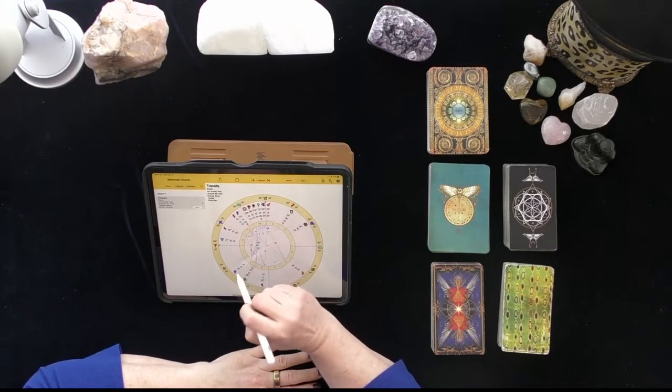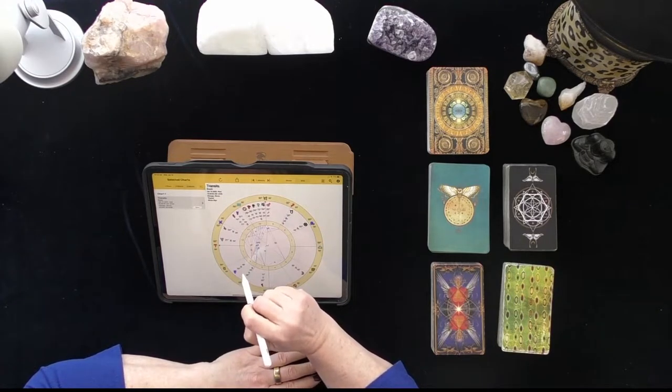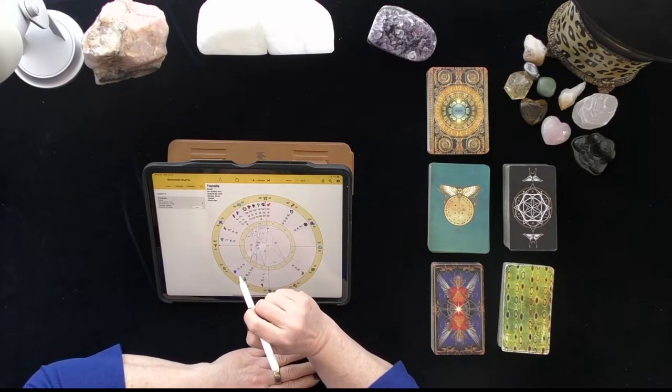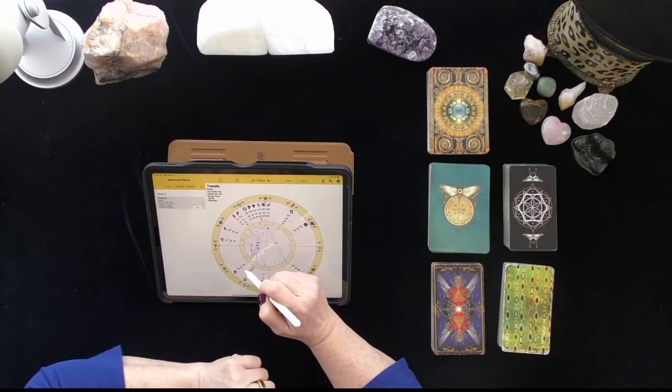So what we're seeing here is that we're getting very unexpected results in an area of our life that we really need stability. We need to be very grounded. That's what the earth signs do for us.